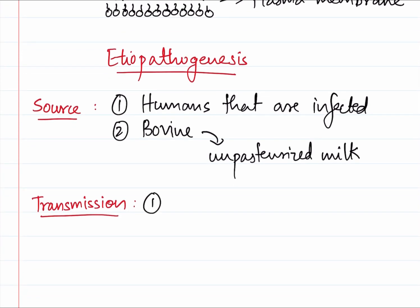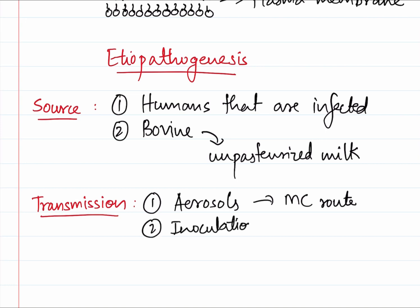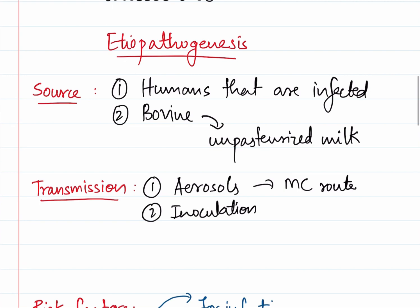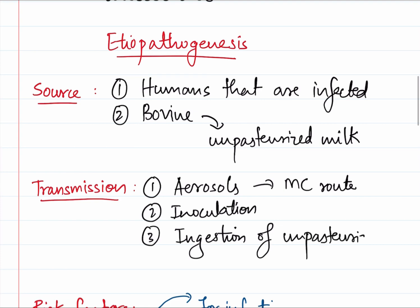Now, how are they transmitted? Human infection is transmitted by aerosols - this is the most common route. Secondly, by inoculation, that is direct skin contact with an infected patient. And finally, bovine transmission is by ingestion of unpasteurized milk. These are the three ways by which Mycobacterium enters into our body to cause tuberculosis.